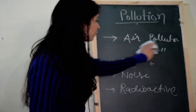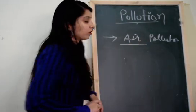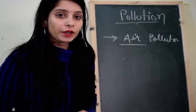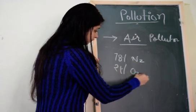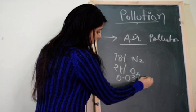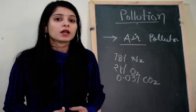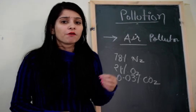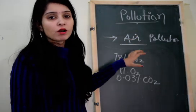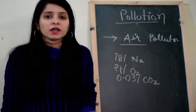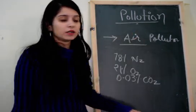First, we will discuss about air pollution. As we know, air pollution is related to pollution of the air. Pure air contains 78% of nitrogen, 21% of oxygen, 0.03% of carbon dioxide, besides this there are other gases, inert gases, and water vapors present in pure air. But if some foreign gases and foreign particles are added to the atmosphere, they degrade the quality of air, and this is called air pollution. In simplest terms, if the physical, chemical, and biological characteristics of air change, it is called air pollution.